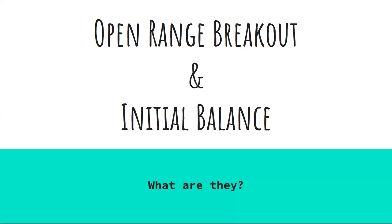Let's begin. You would have seen on the chart an annotation that says IB high and IB low, which means the initial balance high and the initial balance low — that's where I want to start today. The initial balance comes out of the opening range. So what is the opening range and what is the initial balance?